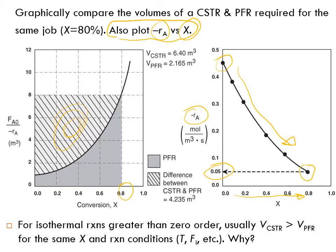For isothermal reactions greater than zero order — meaning reactions whose rates are a function of concentration — the volume of a CSTR is greater than the volume of a plug-flow reactor for the same conversion and same reaction conditions.